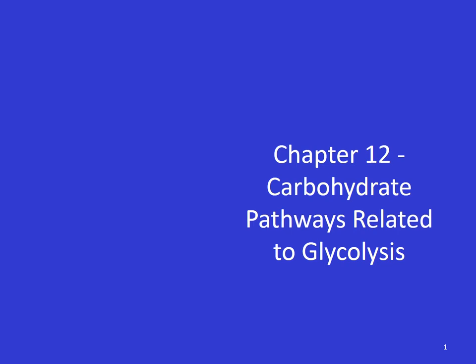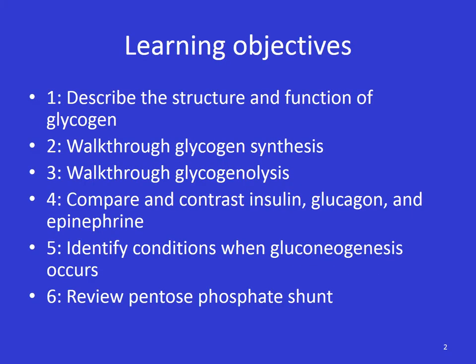Carbohydrate pathways that are related to glycolysis. Today we have six learning objectives. First, we're going to describe the structure and function of glycogen, which you guys already know some about. We're also going to walk through both glycogen synthesis and the breakdown of glycogen called glycogenolysis. We're going to compare and contrast three small peptide hormones: insulin, glucagon, and epinephrine. We're also going to identify conditions when gluconeogenesis occurs, and finally do a quick review of the pentose phosphate shunt.